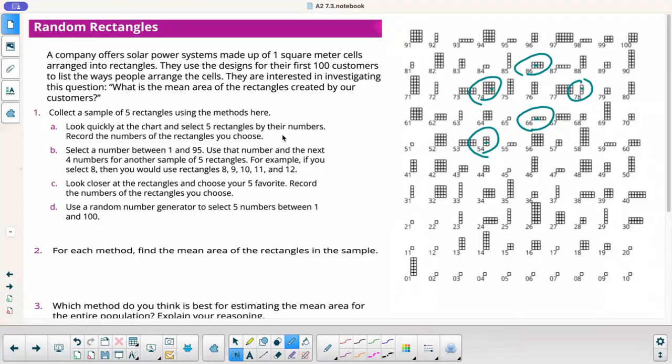So, look quickly at the chart, select five rectangles by their numbers. Record the numbers of the rectangles you chose. So, I had 54, 66, 74, 78, 86. Select a number between 1 and 95. Use that number and the next four numbers for another sample of five rectangles. For example, if you select 8, then you would choose 8, 9, 10, 11, 12. I'm going to go with 32. So then I'd have 33, 34, 35, 36.